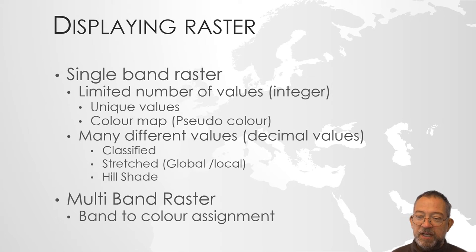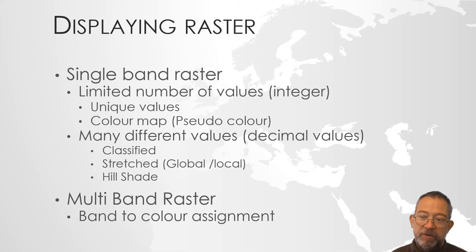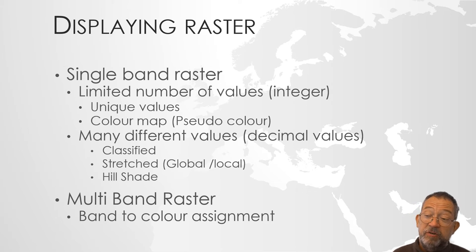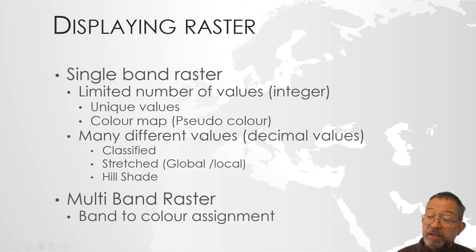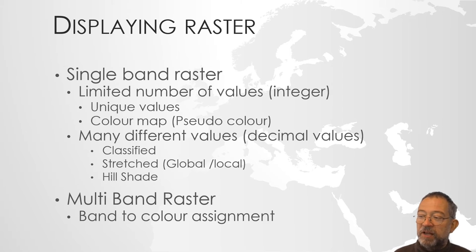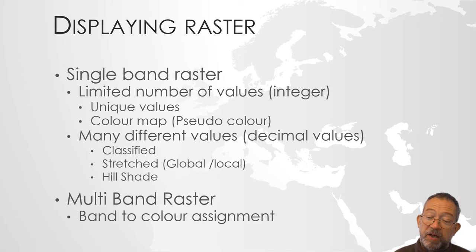We can assign colors to integral raster data using a color map or pseudo-color mapping. If they have an attribute table we can use the unique values system and then apply standard layer files with legends. There are also datasets that have many different values, so you can think of them as being continuous — having real numbers — and they have another set of display possibilities.